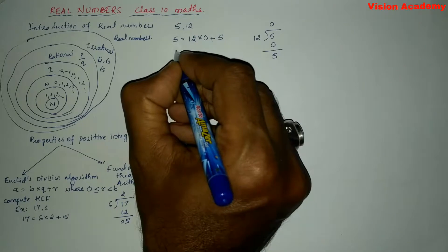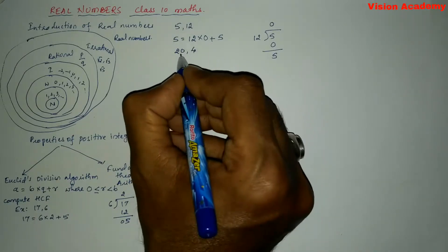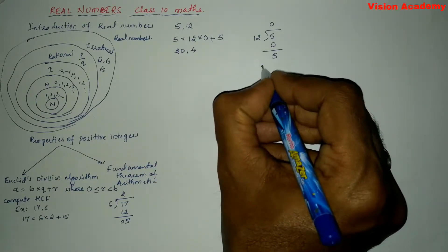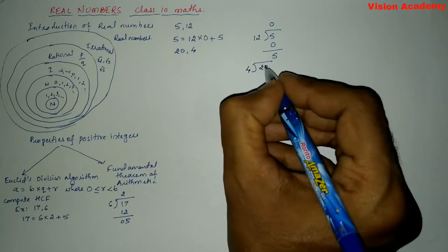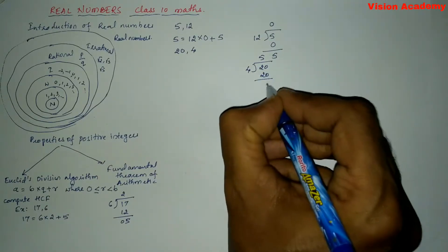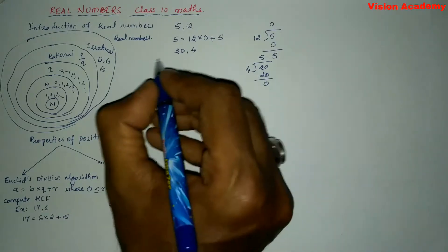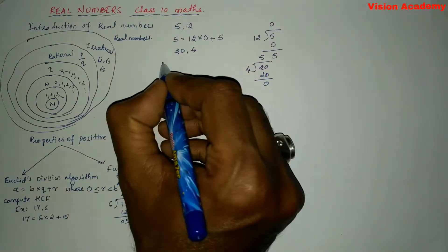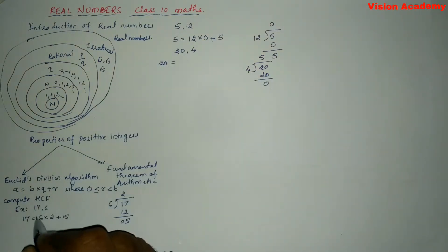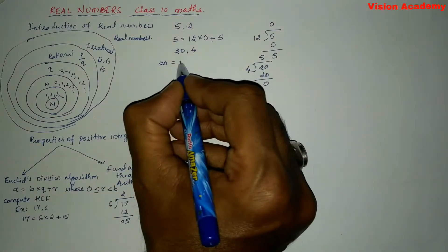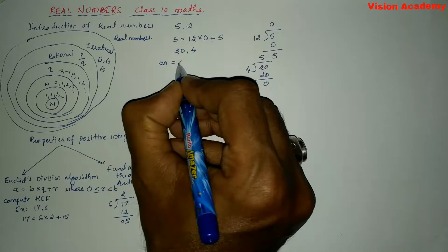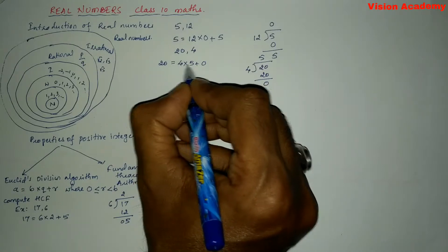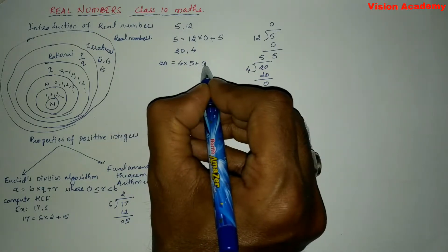Let us take one more example: 20 and 4. Here 20 is acting as dividend and 4 is acting as divisor. Let us divide 20 by 4. Four fives are 20, so remainder becomes 0. Applying Euclid's division algorithm: 20 = 4 × 5 + 0. This gives us four fives are 20 plus remainder 0.